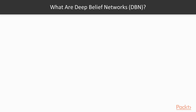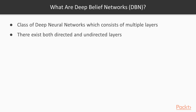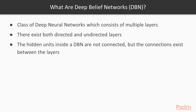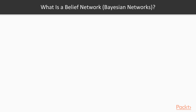So let's see what Deep Belief Networks really are. A DBN is a class of deep neural networks which consists of multiple layers. They are also called generative graphical models, in which connections exist between layers and not between units within one layer. There exist both directed and undirected layers in a DBN. The hidden units inside the DBN are not connected, but the connections exist between the layers. In order to understand how a DBN works, we need to learn about two important components: the belief network and the Restricted Boltzmann Machine, or RBM.